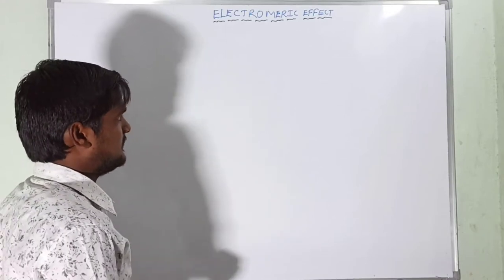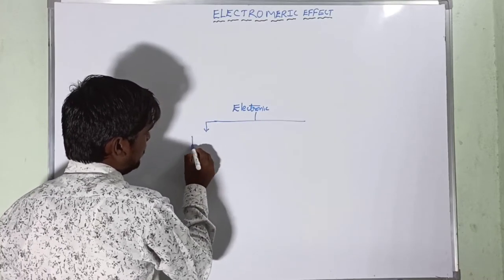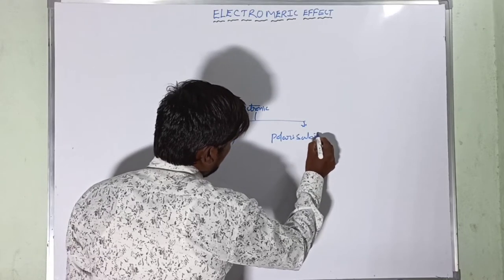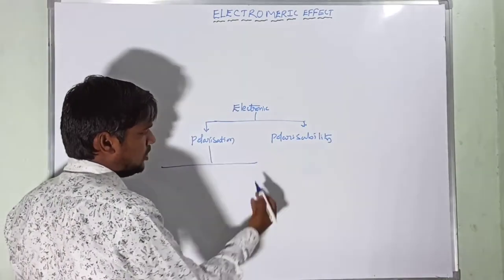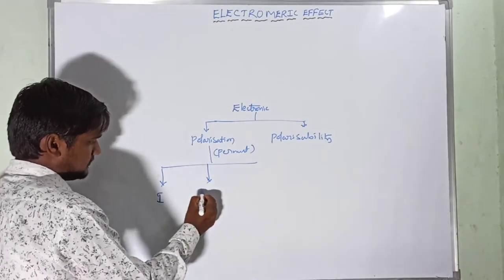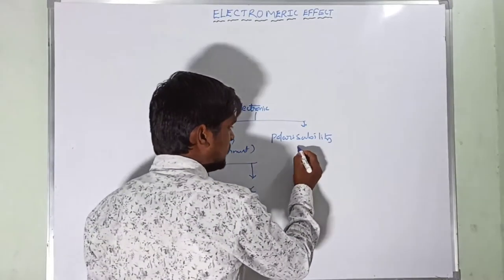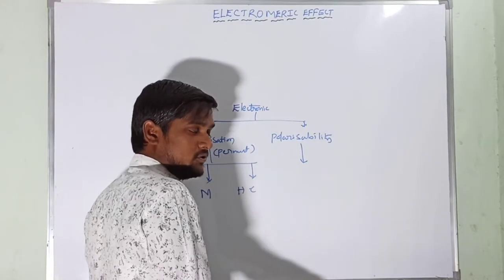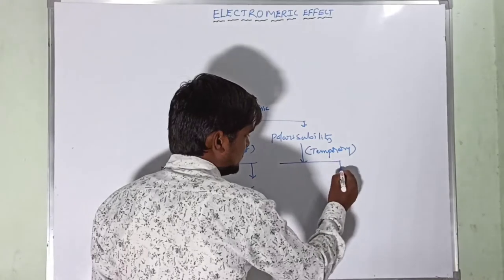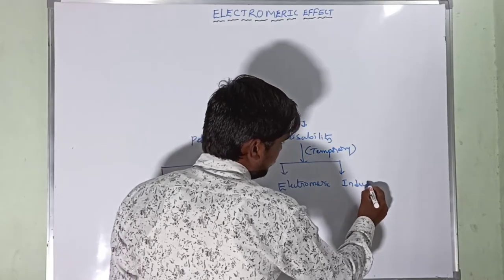Let's move on to the basic concept of electronic effects. Electronic effects are two types based on their polarization and polarizability. Polarization occurs in the molecule as permanent effects — we observe inductive effect and mesomeric effect. Polarizability is observed in the presence of additional reagents only, that is the temporary effect. Temporary effects are two types: electromeric effect and inductomeric effect.